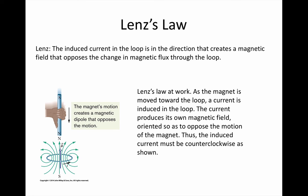It must work that way because of conservation of energy. Because if, just by beginning to move the magnet closer, a magnetic field was created that accelerated the magnet in the same direction, the magnet would be accelerating without any external force acting on it — the energy to move the magnet would be coming out of nowhere. Instead, a magnetic force always appears that opposes the motion or opposes a change in flux.